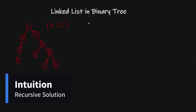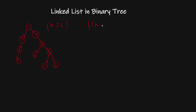Our function has two parameters: head and root. First, I will check if my head is null — if it is, I return true, because the list is already fully matched. If my root is null but head is not null, then I return false.